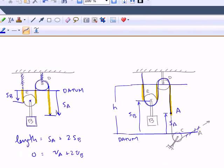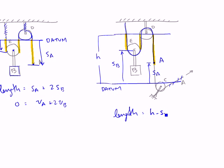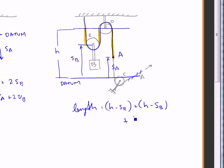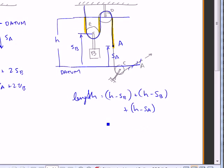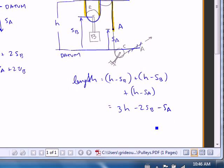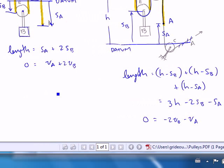So let's see what happens when we express the length that way. So length is going to be H minus SB plus another H minus SB plus an H minus SA. So that's three H's minus two SB's minus SA. If I differentiate both sides with respect to time, I get zero equals. H is constant. So that goes to zero when I differentiate and I get minus 2VB minus VA. So I still get that 2 to 1 ratio. And the two results are identical.